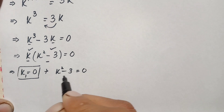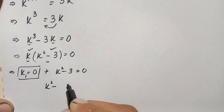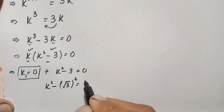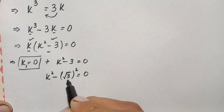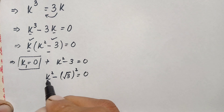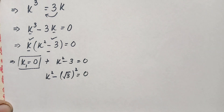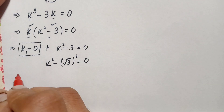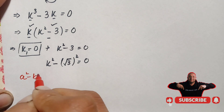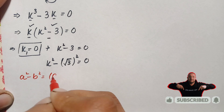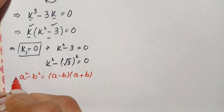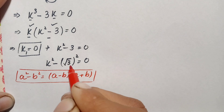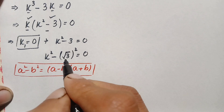Now we solve the quadratic equation k squared minus 3 equals zero for two more solutions. We can write 3 as (√3)², so the equation becomes k squared minus (√3)² equals zero. On the left hand side we use the algebraic identity a squared minus b squared equals (a minus b)(a plus b), where a is k and b is √3.